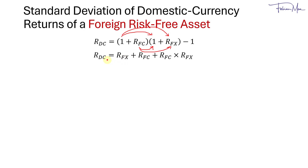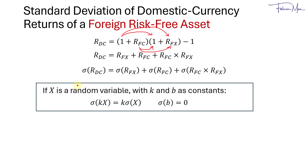Then we find the standard deviation of the returns in domestic currency terms — sigma for standard deviation. Each term will have its own sigma. Using properties of statistics: if x is a random variable and k and b are constants, then the standard deviation of k times x equals k times the standard deviation of x, where k acts as a coefficient for the standard deviation of x.